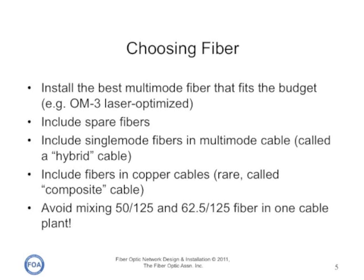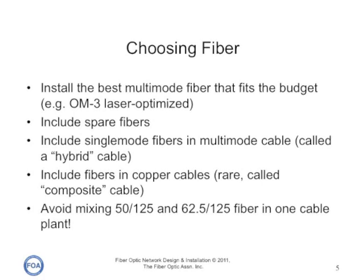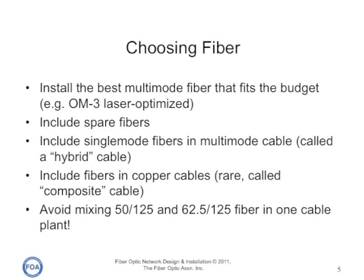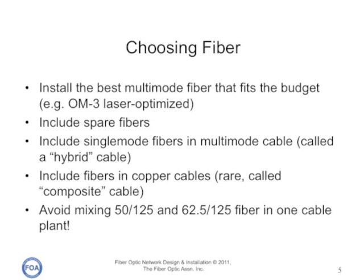We sometimes include fibers and copper conductors in the same cable — we call those a composite cable. We can use them, for example, to bring power to a remote antenna while the signal goes out on fiber. One of the things we try to do is avoid mixing incompatible fibers, like 50/125 and 62.5/125, in one cable plant.